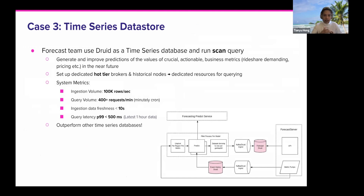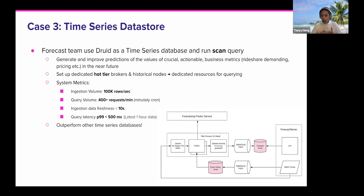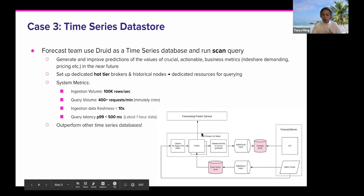The third use case is using Druid as a time series data store. We have a forecasting team that uses the most recent data to improve predictions of business metrics like ride-share demand and pricing. Those predictions are for the near future, and they specifically emphasize getting the most recent data, so data freshness and query latency are very important — that's why they chose Druid as their time series data store.